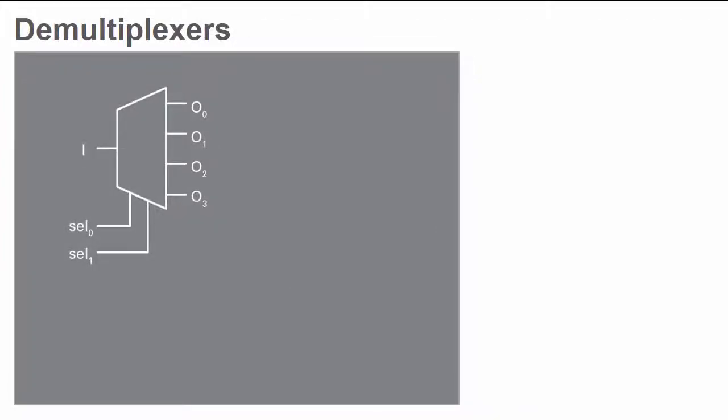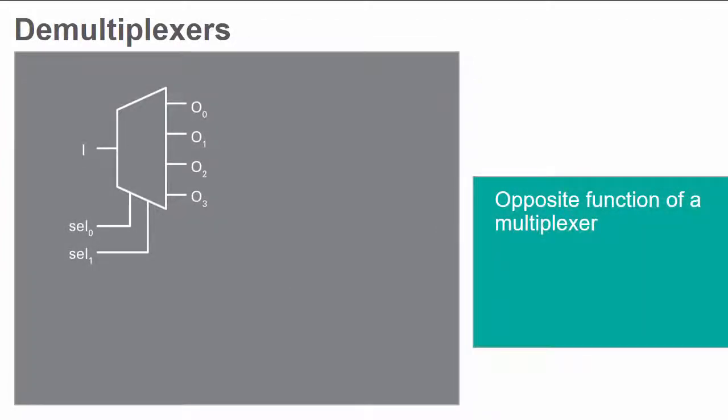Demultiplexers are combinational logic circuits that have the opposite function of a multiplexer. They have one input, S selector inputs, and two S outputs.